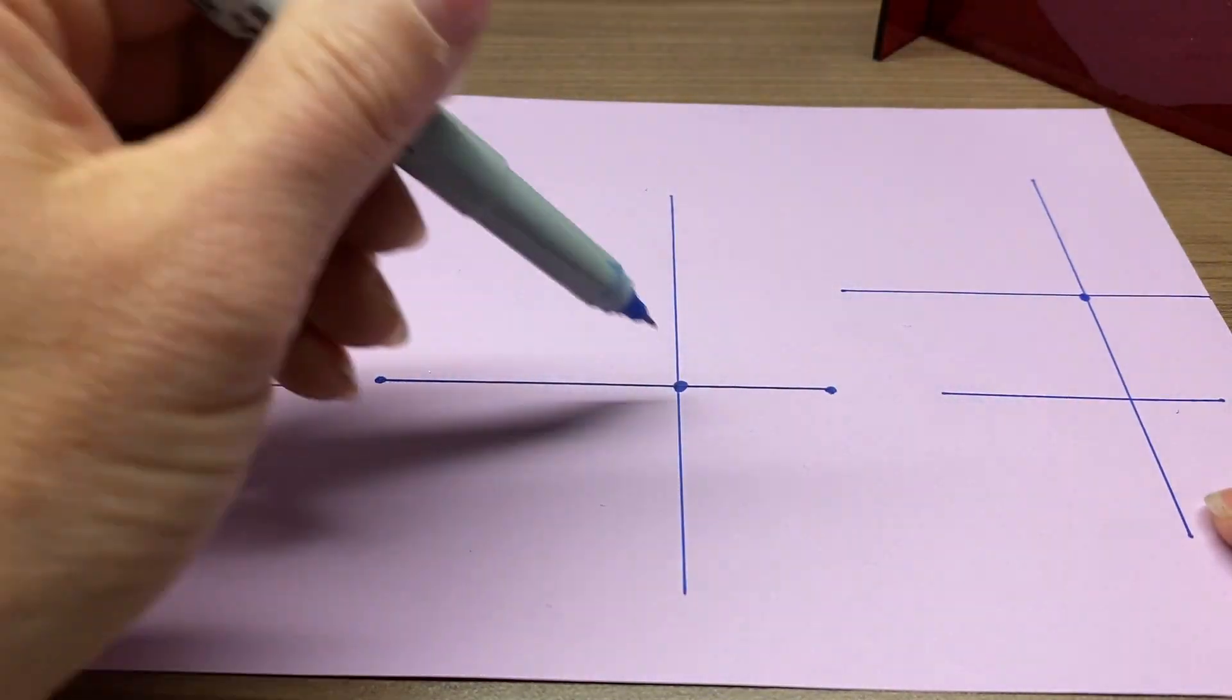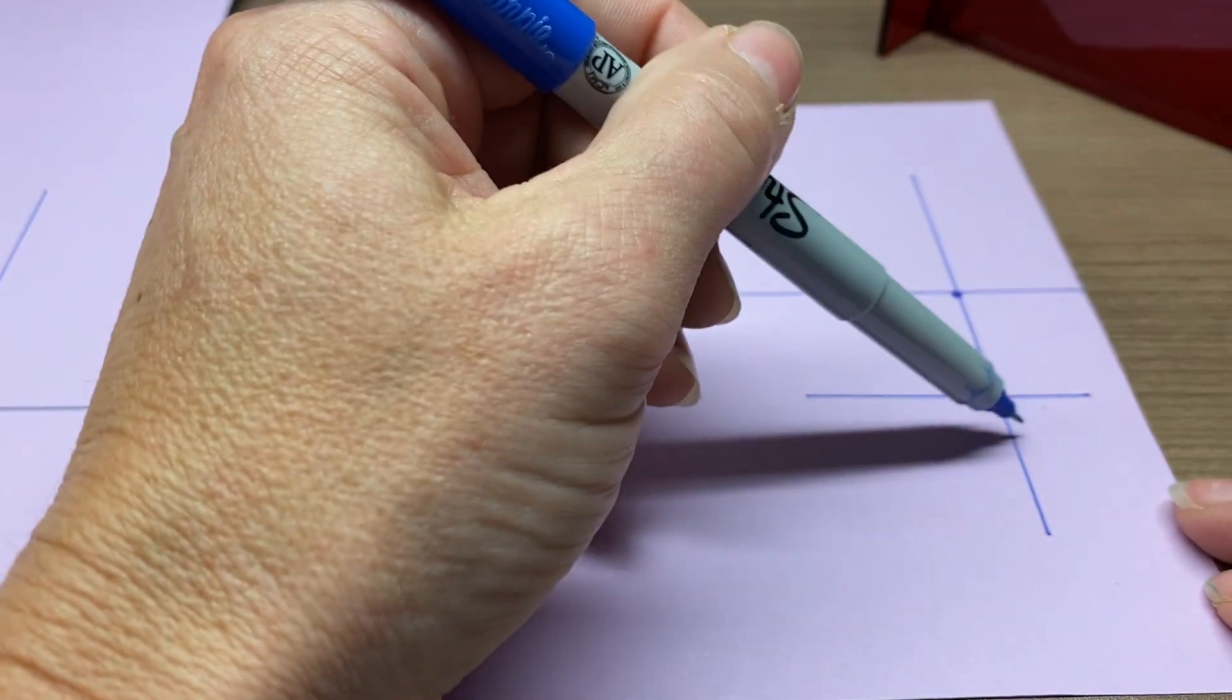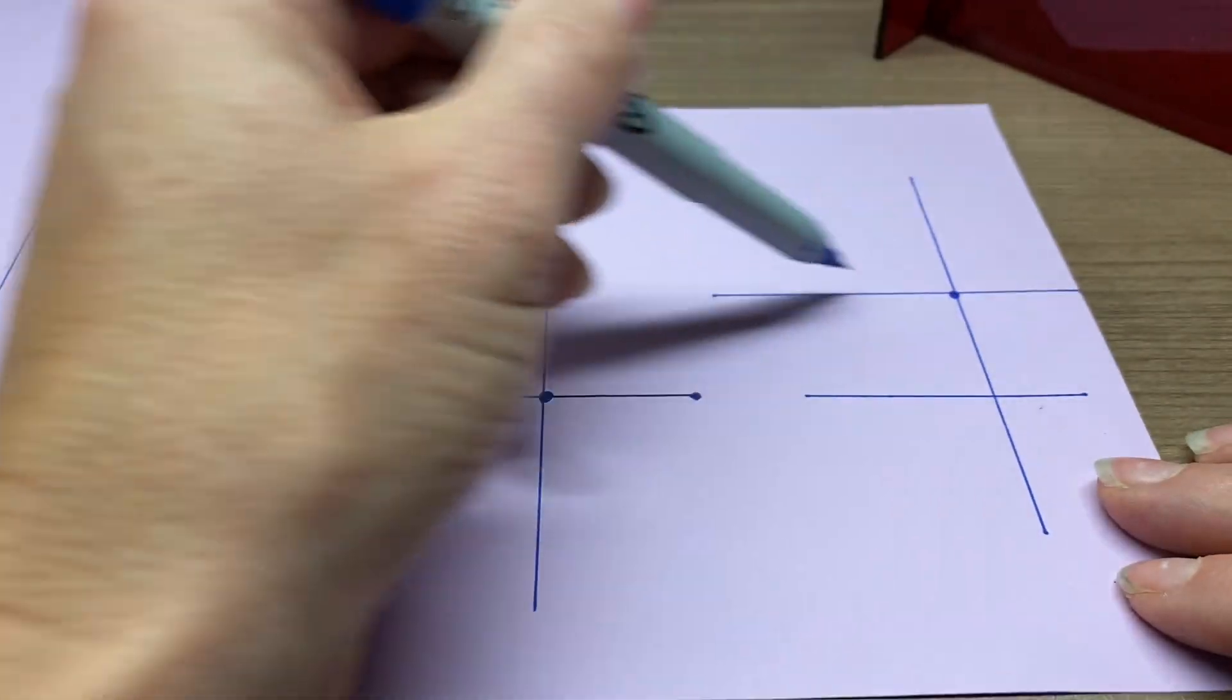So we have perpendicular bisector, perpendicular through a point, perpendicular through a point off the line, and then parallel.